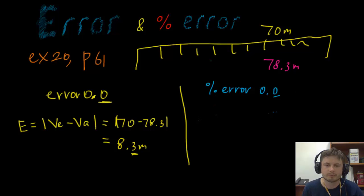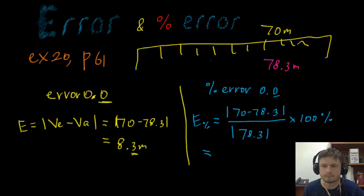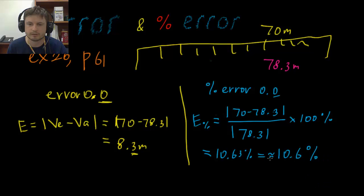All right. So let's find the percentage error now. The percentage error is going to be a little bit more tricky because there's more numbers involved. So here we have 70 minus 78.3 divided by what is our actual value? The actual value here is 78.3 and then multiplied all of this by 100%. And what we'll get here is it's about 10.63%. But since it has to be to one decimal point, we're going to rewrite this as 10.6%. And it's actually better to use approximate equal sign. So approximately 10.6%. And that's the answer to example 20 on page 61.